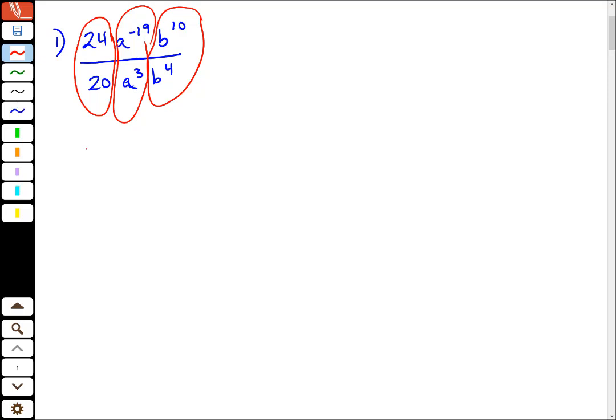So this problem is exactly the same as 24 over 20, and I can think of it like there, 24a to the minus 19th over a cubed times b to the 10th over b to the 4th.